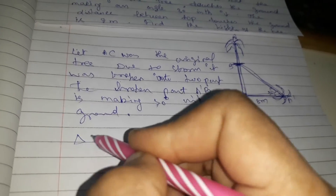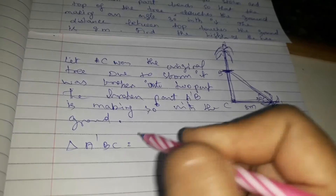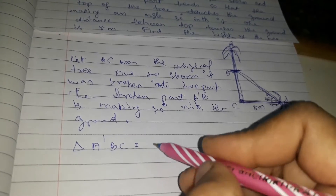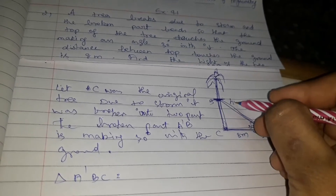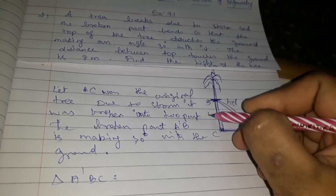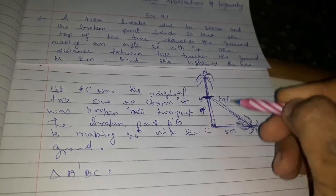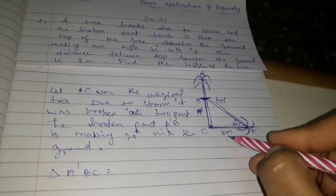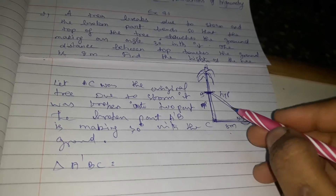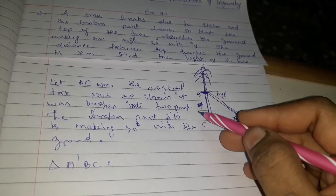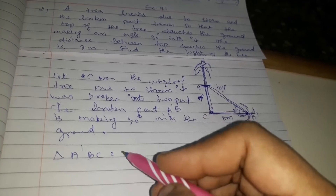In triangle A-B-C, A-B is equal to the hypotenuse. We need to calculate the opposite side and the hypotenuse, with the adjacent side known.